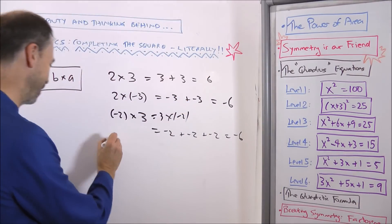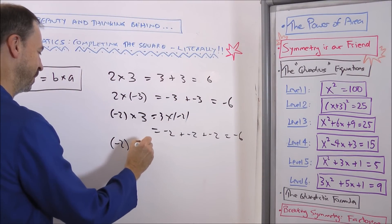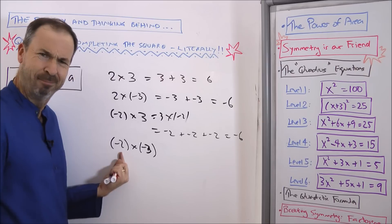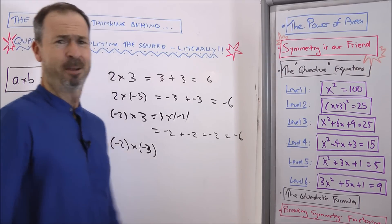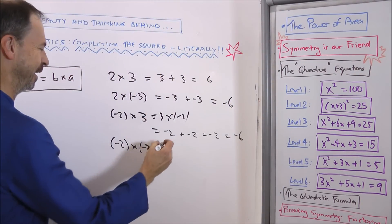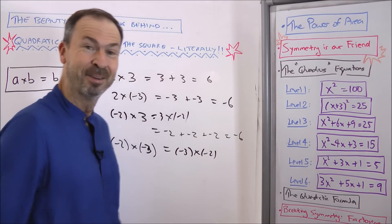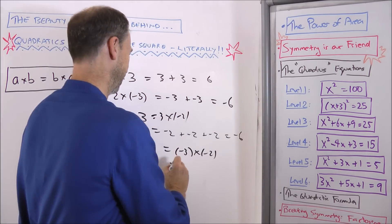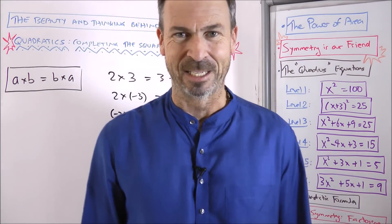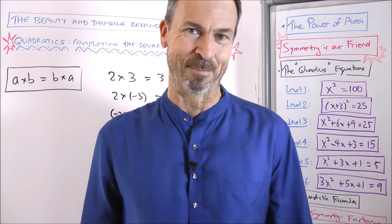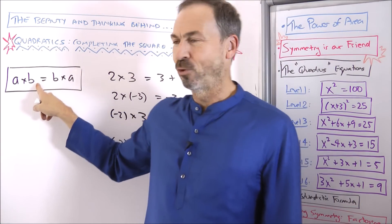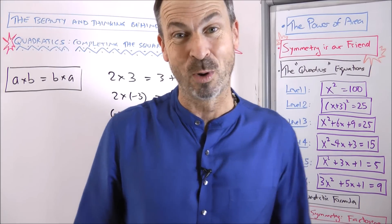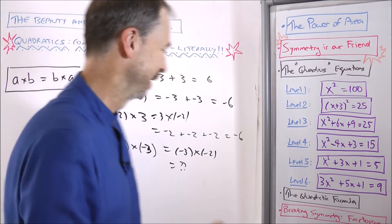So: positive times positive is positive, positive times negative is negative, negative times positive is negative. The remaining question is negative times negative — say negative two times negative three. That's negative two copies of negative three, which doesn't make sense. And if we switch it, negative three copies of negative two also doesn't make sense. We're stuck. But here's the way around it — let's push the geometry to hold for all numbers.